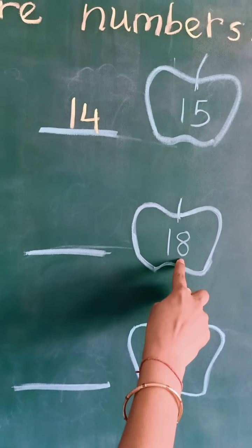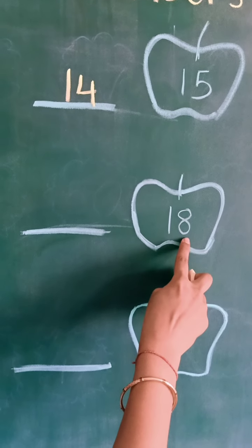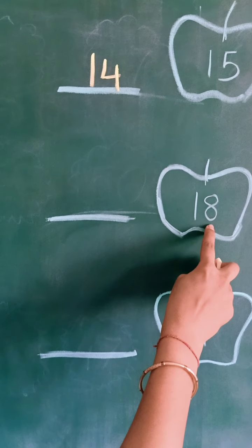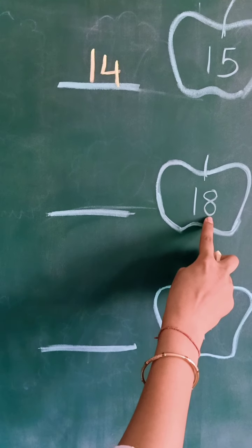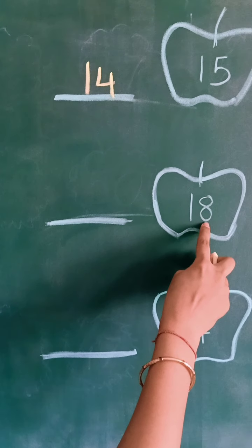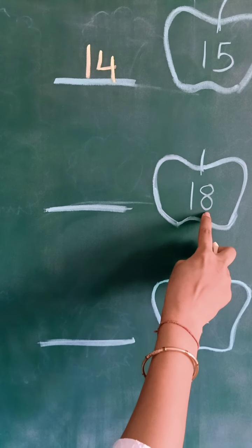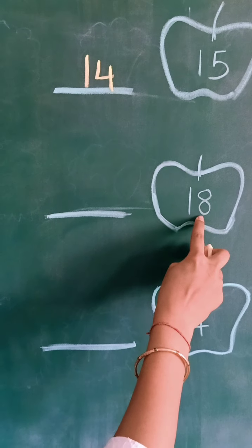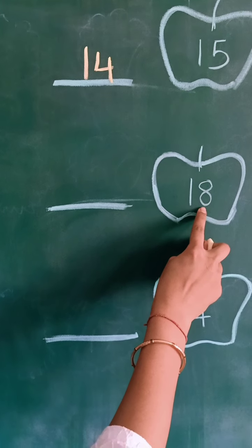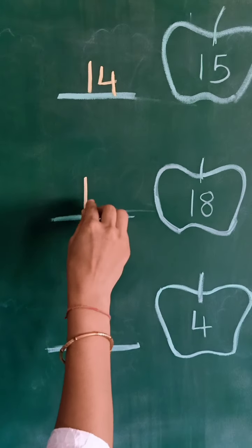Number 18. We speak 11 to 18 numbers: 11, 12, 13, 14, 15, 16, 17 and 18. Which number we speak before 18? Number 17.